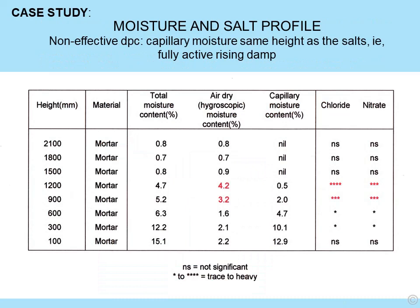Looking at a case study: we have a moisture and salt profile. The salts indicate that rising damp has risen to around 1,200 mm in the past. However, we still have free moisture rising up to the same height — both at 1,200 mm. In this case we've still got fully active rising damp; there has been no control by the retrofit damp proof course — in other words, it didn't work.